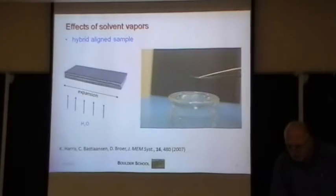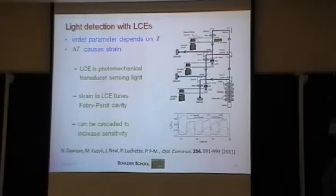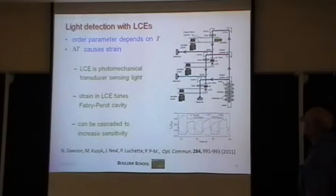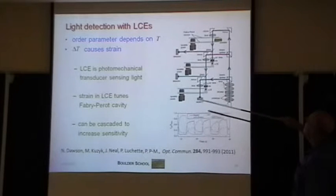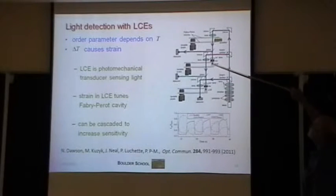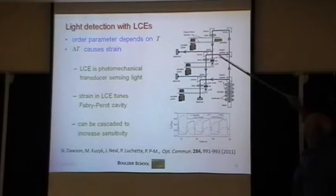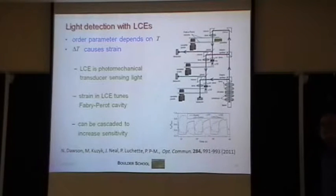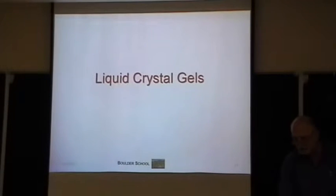You can do other things as well. Mark Kuzyk made a detector using a very small liquid crystal elastomer inside a Fabry-Perot cavity. By changing the dimensions of the elastomer, you can change the resonance frequency of the cavity and measure light intensity very sensitively. You can cascade these things to make it even more sensitive. There are all sorts of funny applications.